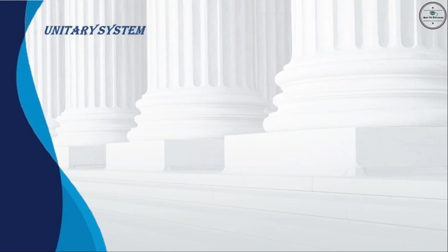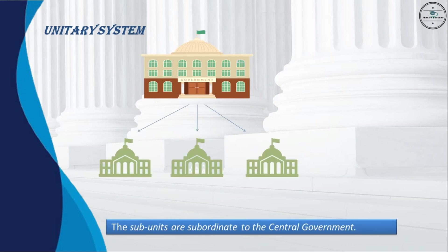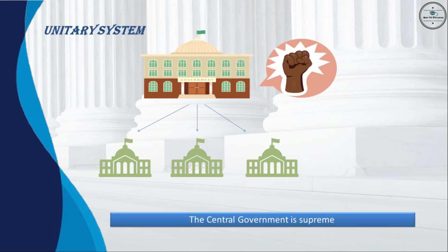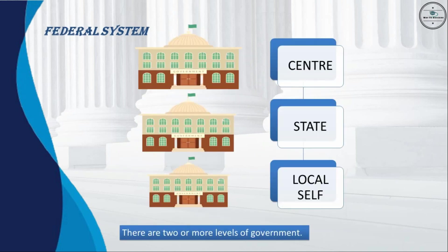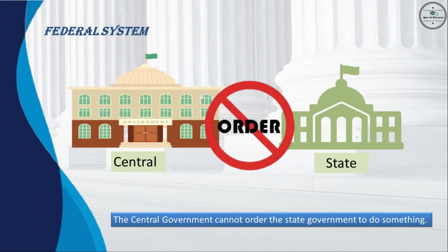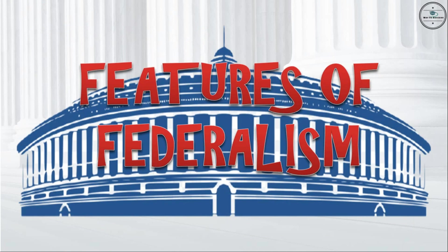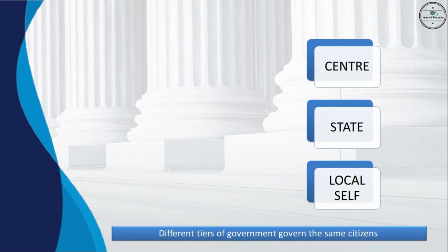Let's look at the difference between the unitary system and the federal system. In a unitary system, there is only one level of government, or the sub-units are subordinate to the central government. The central government can pass orders to provincial or local governments and is supreme. In a federal system, there are two or more levels of government; the central government cannot order the state government, and the state government has powers of its own.